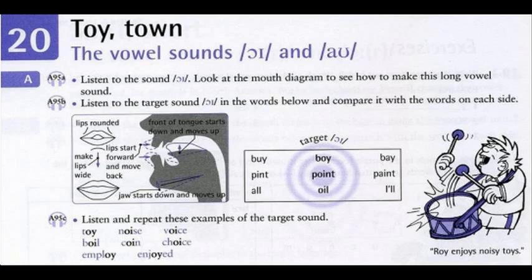95 C. Toy. Noise. Voice. Boil. Coin. Choice. Employ. Enjoyed.